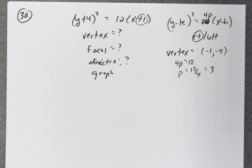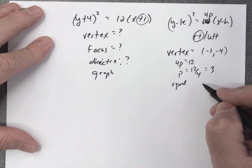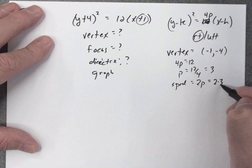So that's going to be the distance from the vertex to the focus and from the vertex to the directrix. And because we're going to use it eventually, what I call the spread, 2p, 2 times 3 is going to be 6.